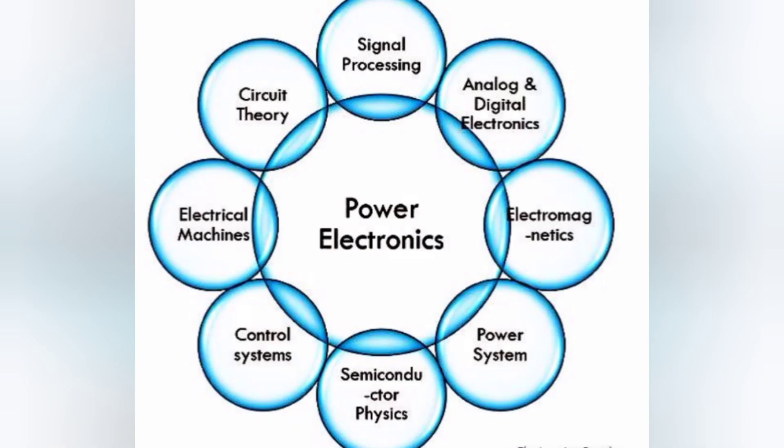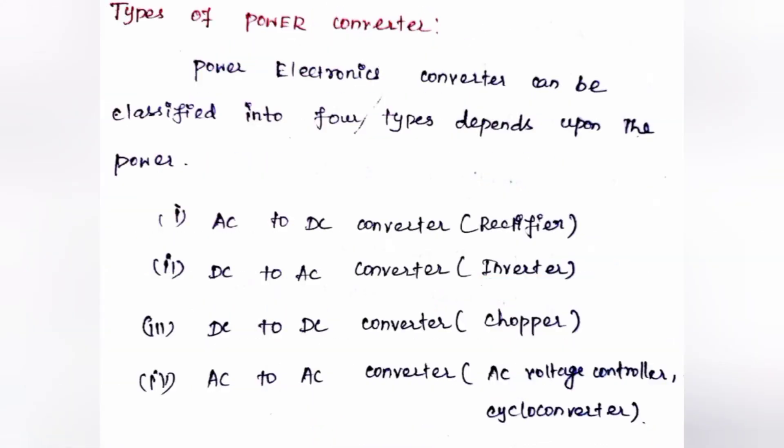Power electronics is related to all engineering subjects. What subjects are related to power electronics? Signal processing, analog and digital electronics, electromagnetics, power systems, semiconductor physics, control systems, electrical machines, and circuitry. These are all the subjects related to power electronics.